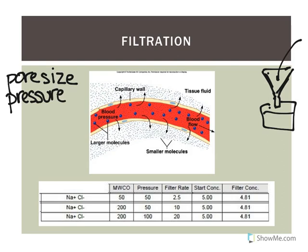This is demonstrated using an experiment with molecular weight cutoff (MWCO) membranes. A membrane rated at 50 won't allow anything greater than 50 to pass through, while one rated at 200 allows bigger molecules across, which relates to pore size. Applying the same pressure, when the molecular weight cutoff is quadrupled from 50 to 200, the filtration rate also quadruples — going from 2.5 to 10.